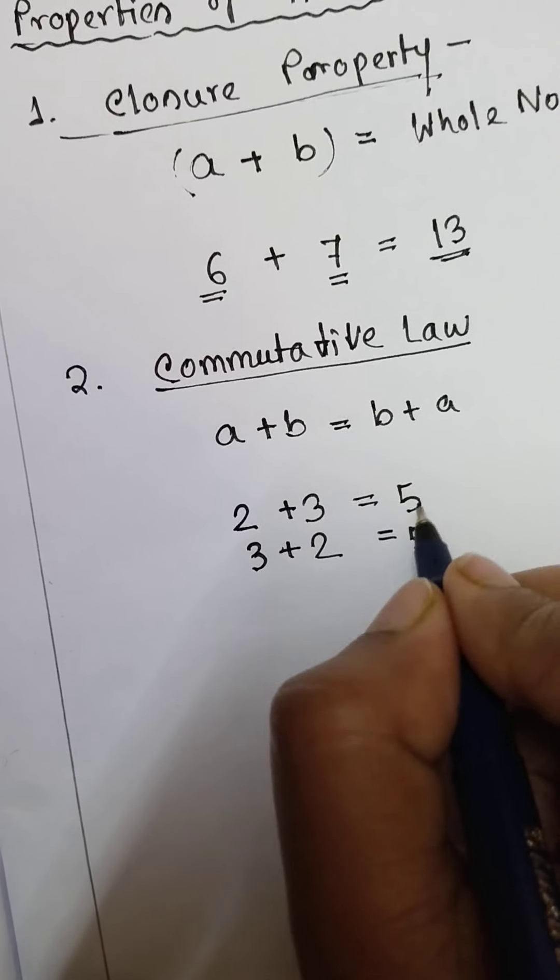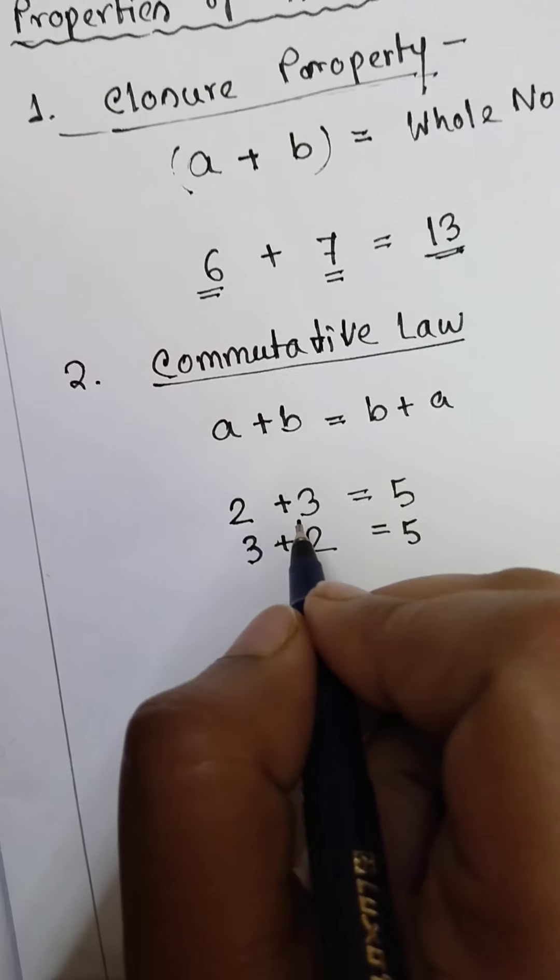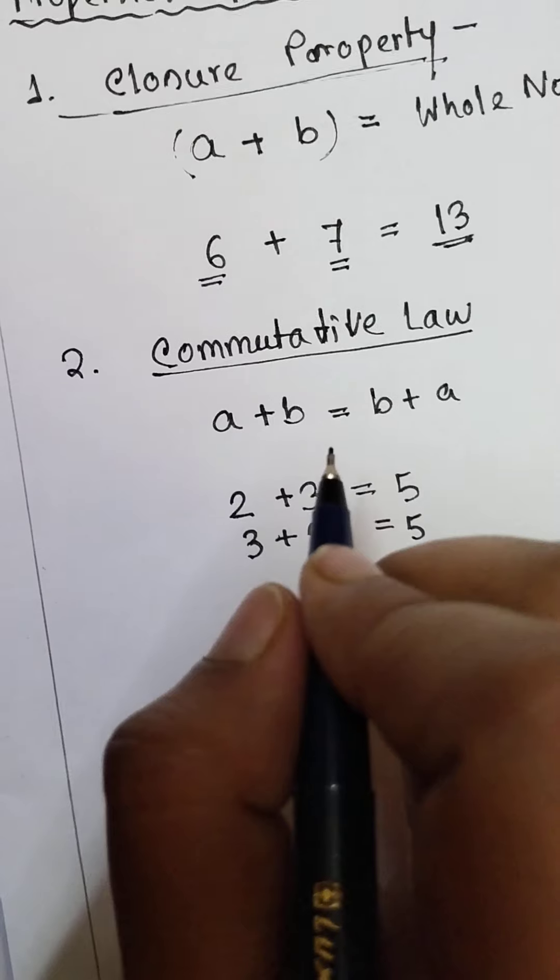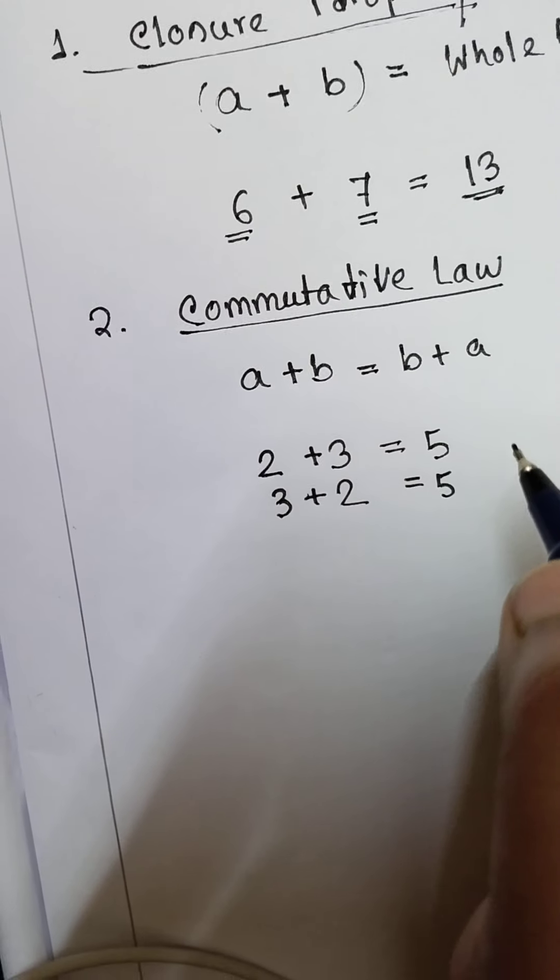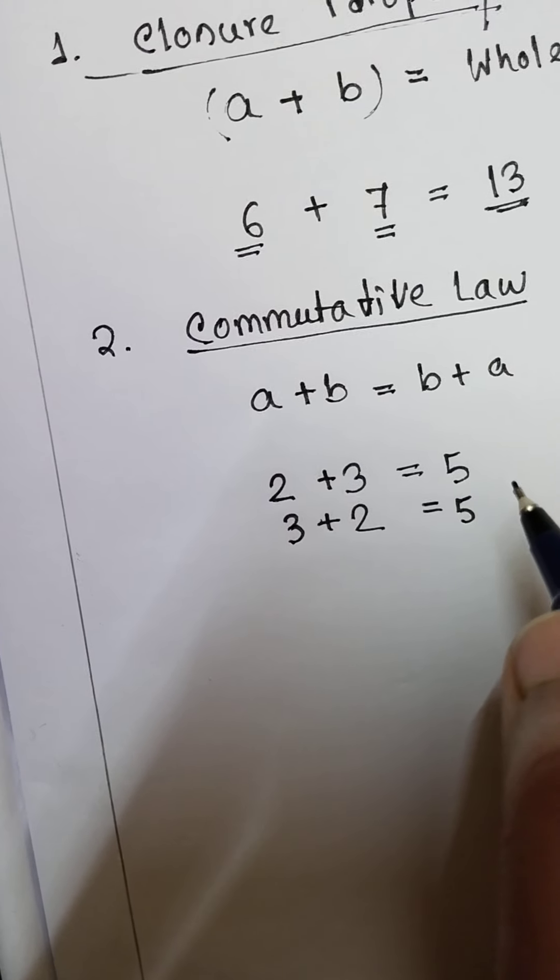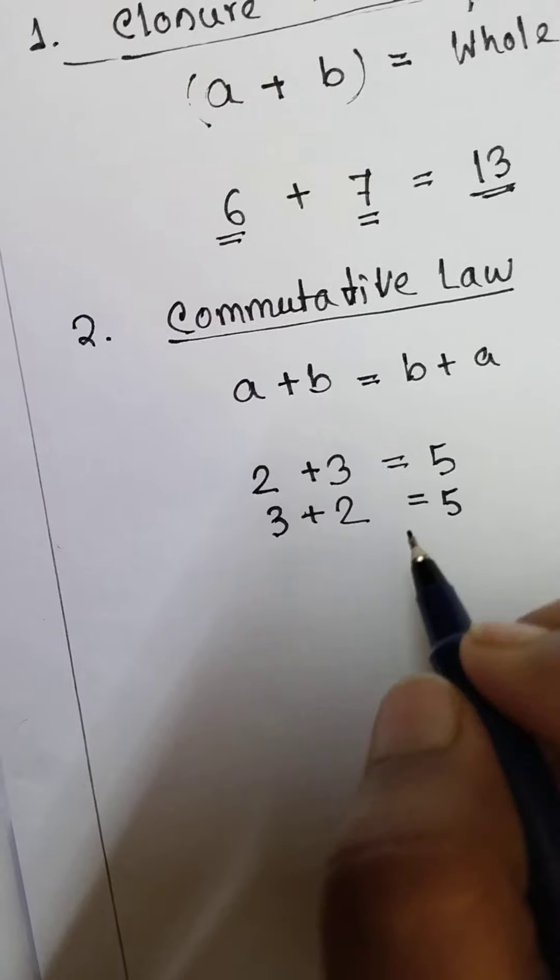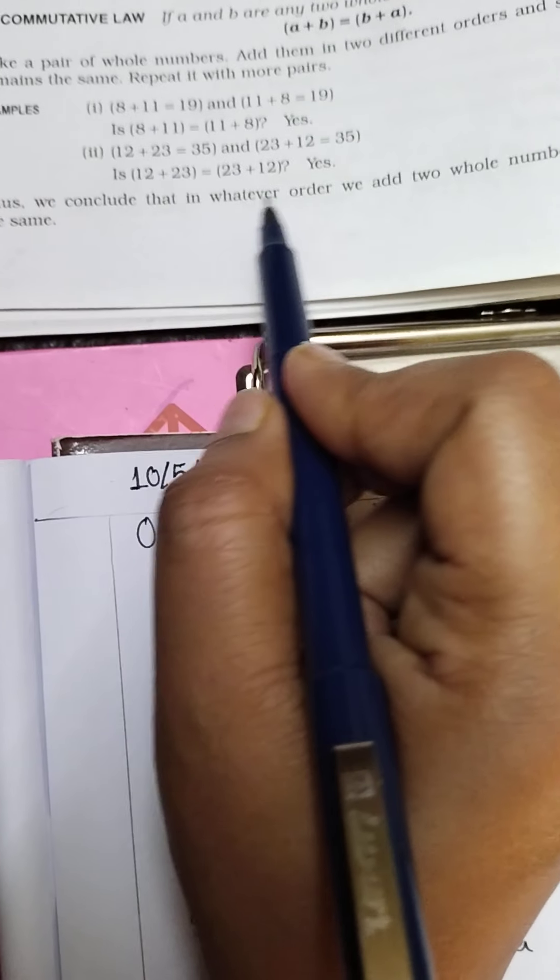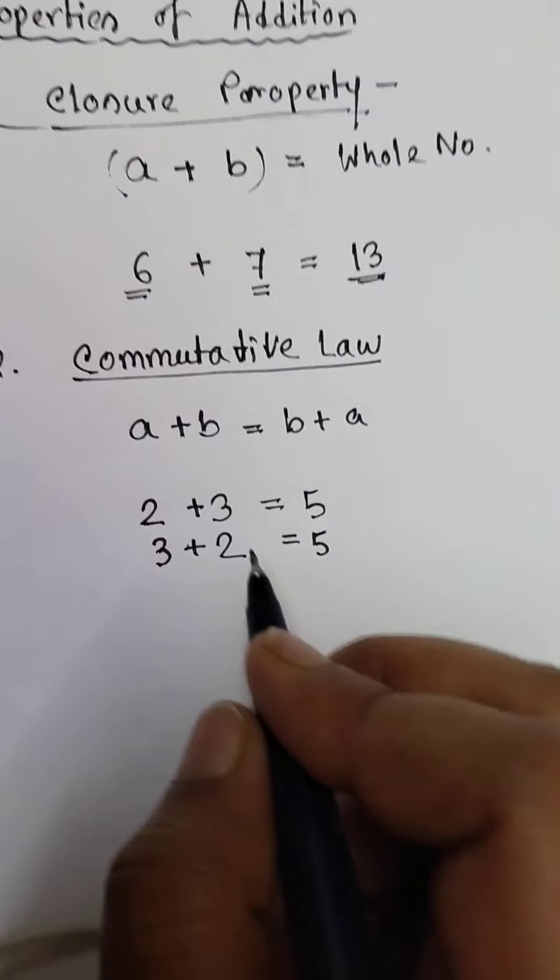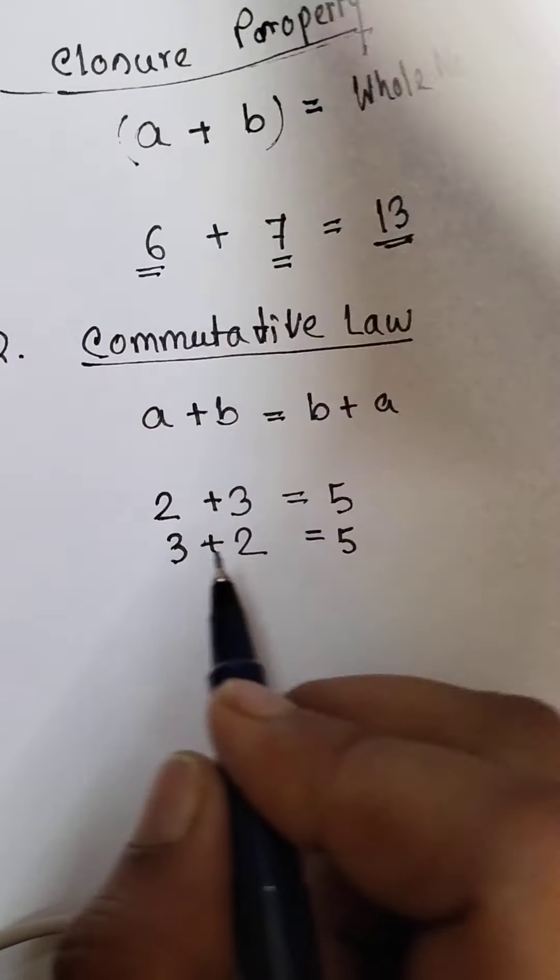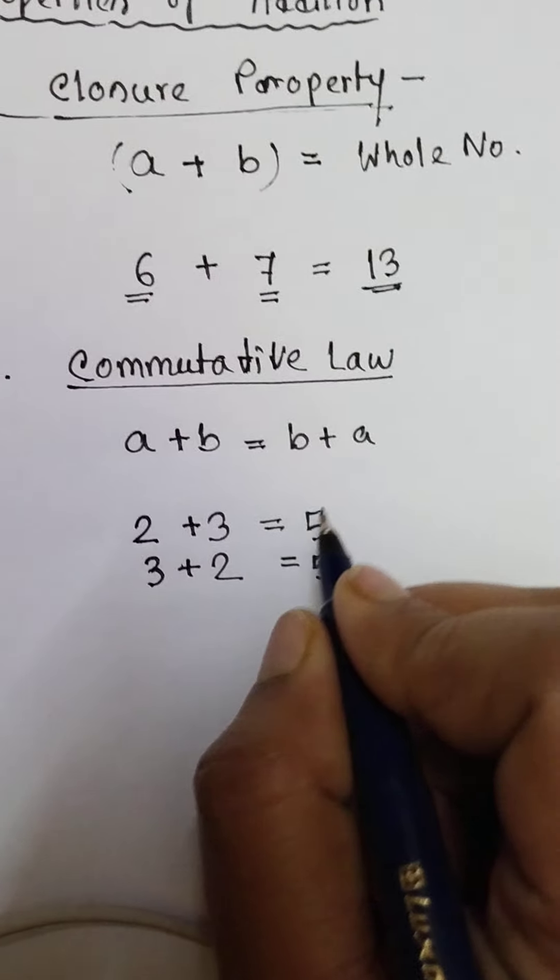So the answer did not change even though I changed the position of these whole numbers. This is the commutative law. In whatever order we add two whole numbers, the sum remains the same. Ordering of these two whole numbers during addition will not change its result.